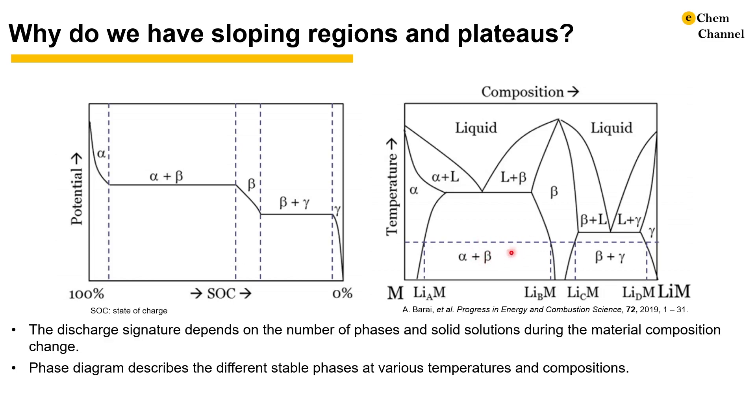In the alpha plus beta region, the material goes through phase transformation from the composition of lithium A M in the alpha phase to the composition of lithium B M in the beta phase. The composition in the individual phases will not change but the fraction of beta will increase as the overall lithium composition increases. A similar idea applies to the beta plus gamma region.